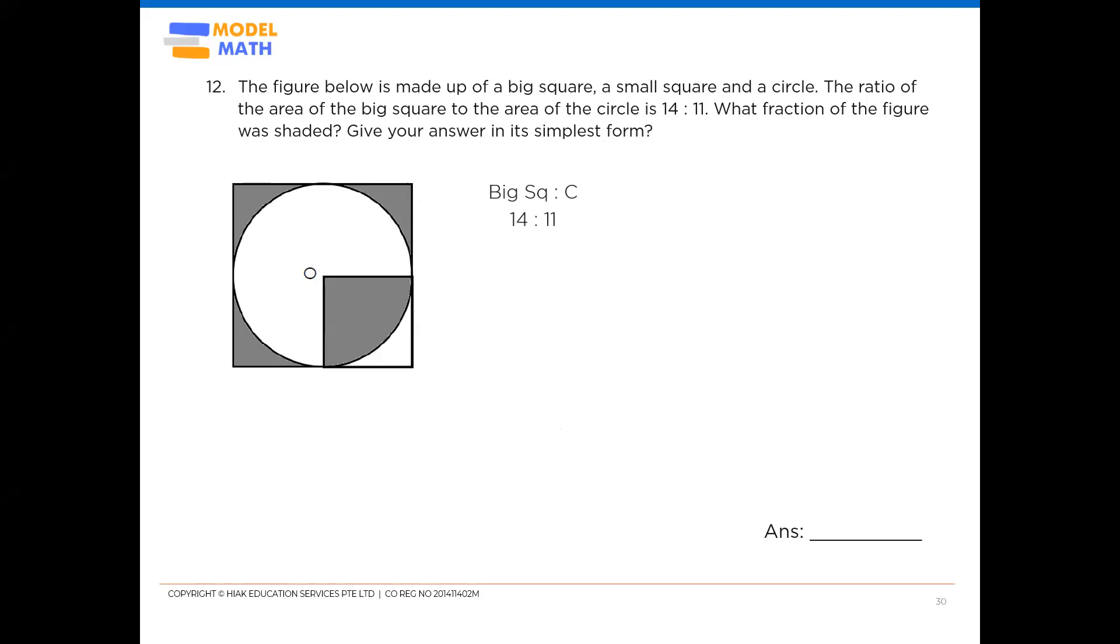Now notice that the question did not provide us with much information. In fact, just give us this ratio and they expect us to straight away work out the fraction of the figure that was shaded. Now with such little information, what you can try to do next is to study the diagram that is provided here. See whether you can gather any other important information that you should analyze from the diagram.